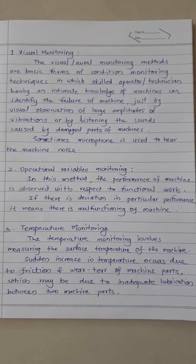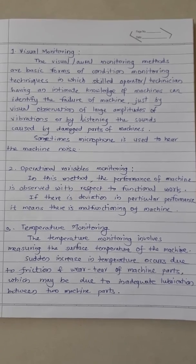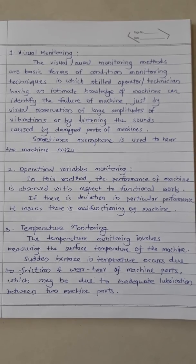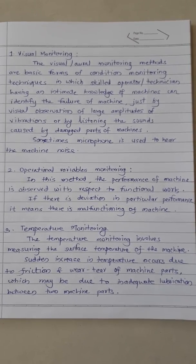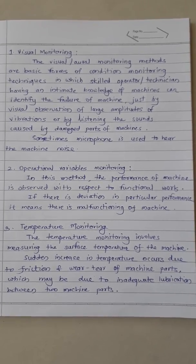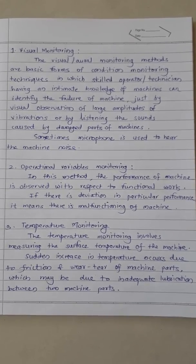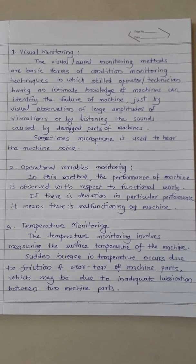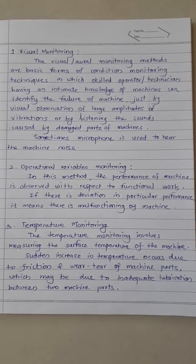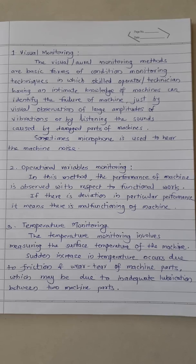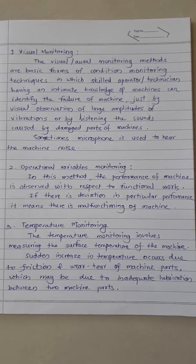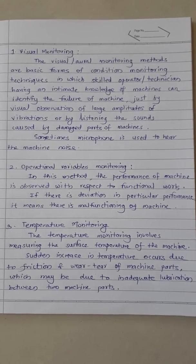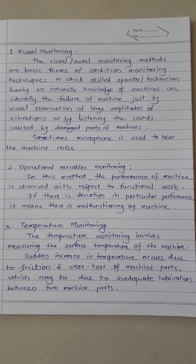Temperature monitoring involves measuring the surface temperature of the machine. A sudden increase in temperature occurs due to friction and wear and tear of machine parts, which may be due to inadequate lubrication between two mating parts. If at a particular temperature the machine is working, and temperature suddenly increases, it indicates friction or wear and tear in parts, possibly due to inadequate lubrication. Through temperature monitoring, we can understand the condition of the machine.